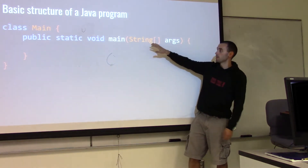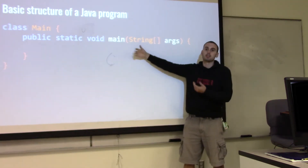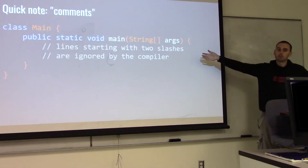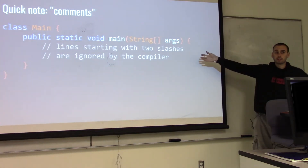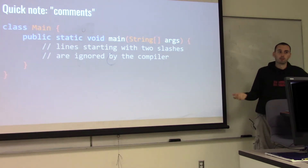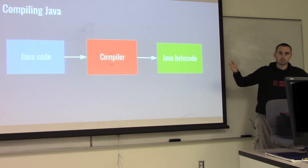Right now we just have this main. Our program is empty, so if we ran this nothing would happen. Any line of code that starts with two slashes is called a comment. This is where you make notes to yourself or other programmers. The compiler will just throw these out — if it sees a line starting with those two slashes it just ignores it.